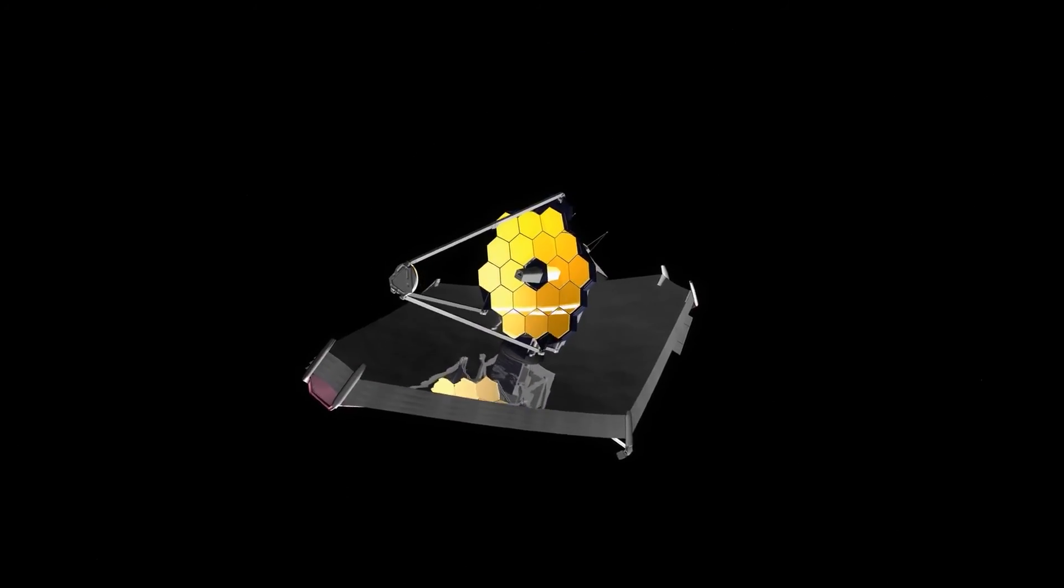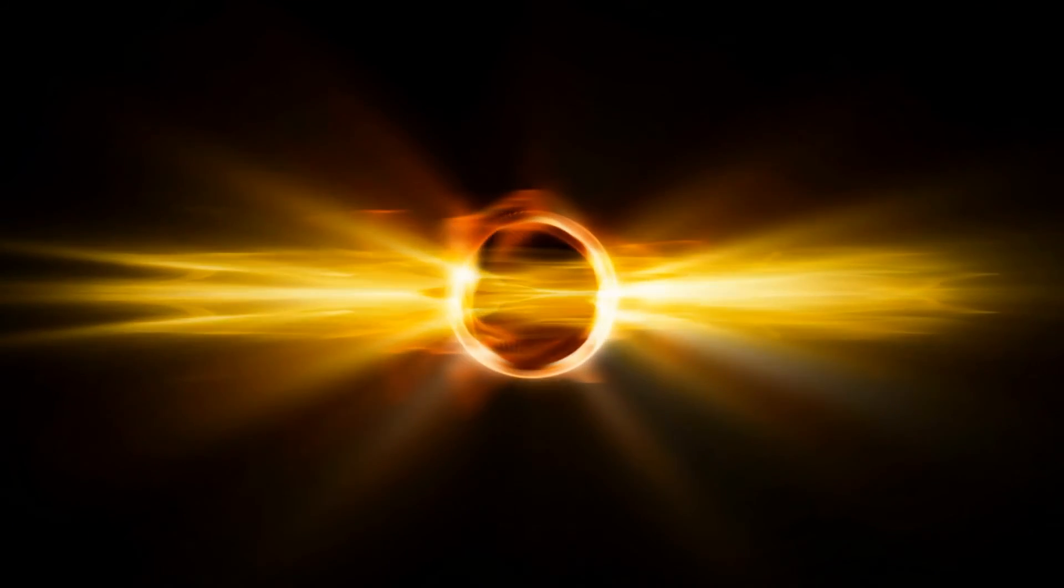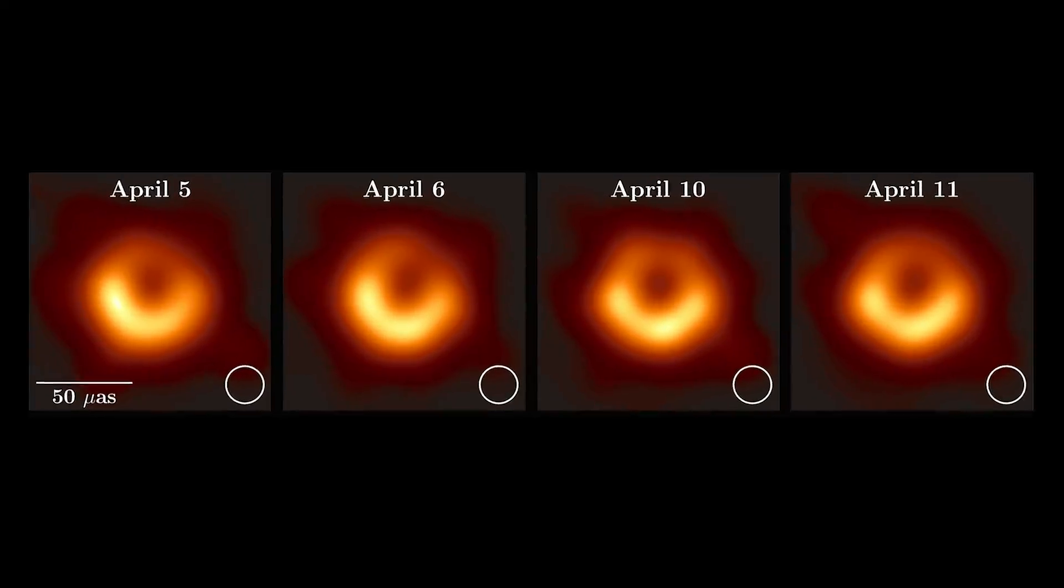Webb will have an unobstructed perspective, allowing it to see cycles of flaring and quiet that the Event Horizon Telescope team may use as a reference with their own data, ultimately resulting in a cleaner image.